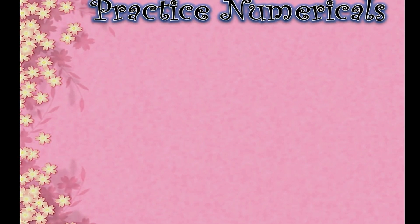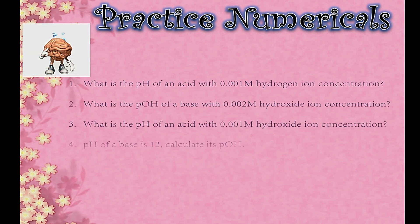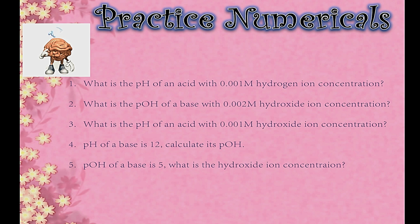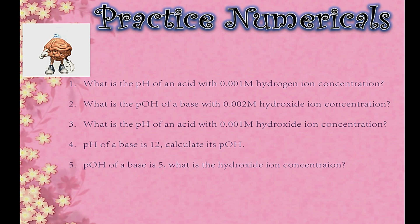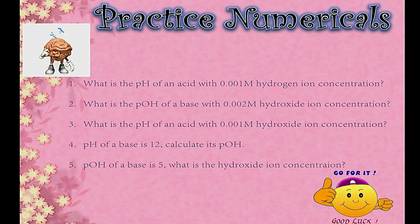Here are five practice problems for you. Pause and note them down. (1) What is the pH of an acid with 0.001 M hydrogen ion concentration? (2) What is the pOH of a base with 0.002 M hydroxide ion concentration? (3) What is the pH of an acid with 0.001 M hydroxide ion concentration? (4) pH of a base is 12 — calculate its pOH. (5) pOH of a base is 5 — what is the hydroxide ion concentration? If you have any problems, ask in the comments.